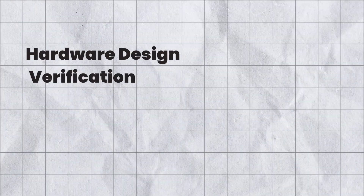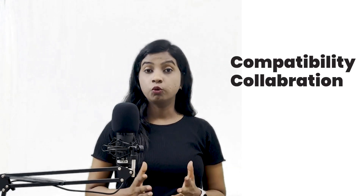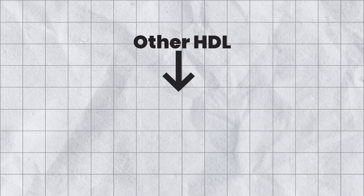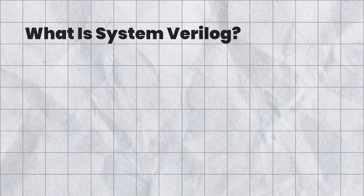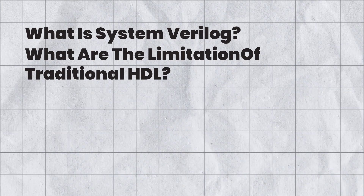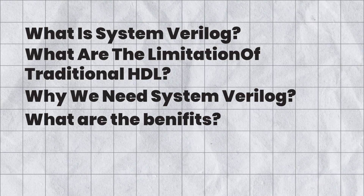System Verilog has become an industry standard for hardware design and verification. It is widely supported by semiconductor companies and EDA tool vendors. Being an industry standard ensures compatibility, promotes collaboration, and makes it easier for engineers to transition from other HDLs to System Verilog. In conclusion, System Verilog overcomes many limitations of traditional hardware description languages. This was the introduction of System Verilog — covering what it is, the limitations of traditional HDLs, why we need System Verilog, and what its benefits are.